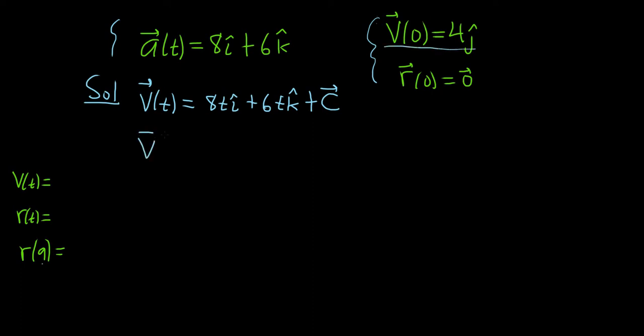So v of 0 is equal to 8 times 0i hat plus 6 times 0k hat plus C, and that's equal to 4j.